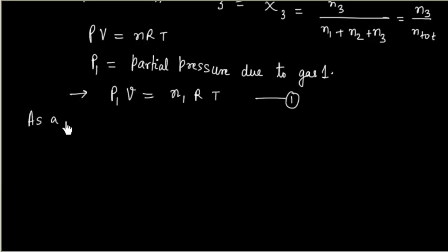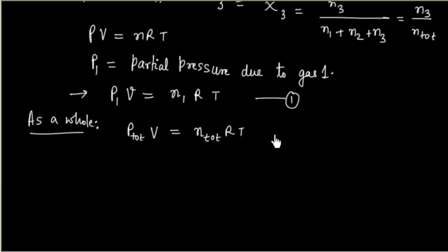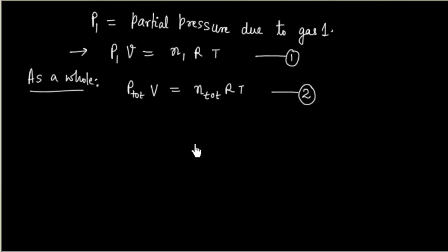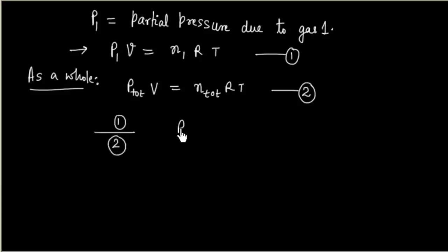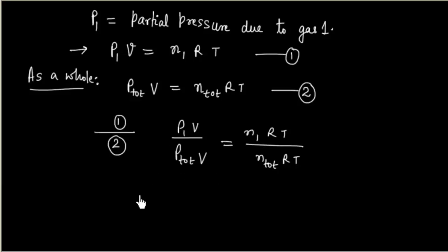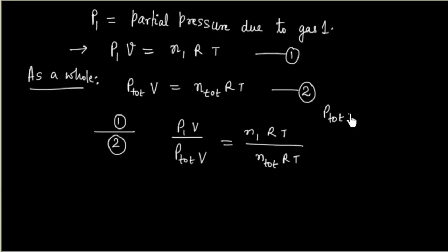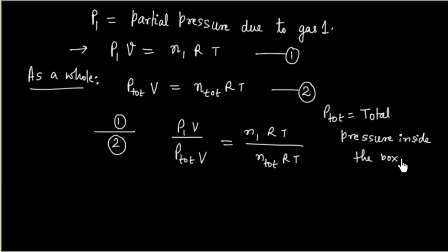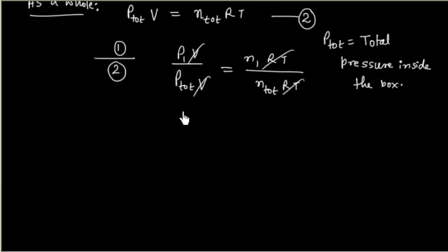We can also apply the ideal gas equation as a whole. So for the total mixture: total pressure times volume equals total number of moles times R times T. This is equation 2. Now if we divide equation 1 by equation 2, we get P1·V divided by P_total·V equals N1·R·T divided by N_total·R·T. Here P_total denotes the total pressure inside the box. V and RT cancel out, giving us P1 divided by P_total equals N1 divided by N_total.